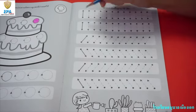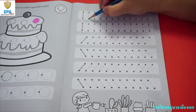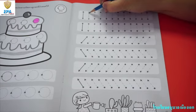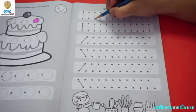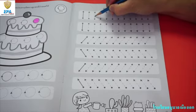Start from this pattern. Start from the dot. Then go up. Start from the dot. And go up.